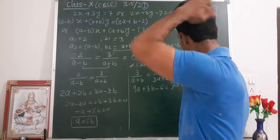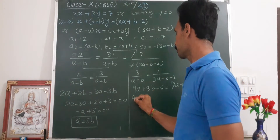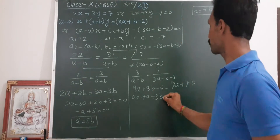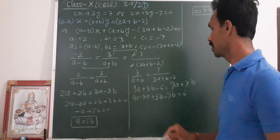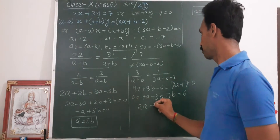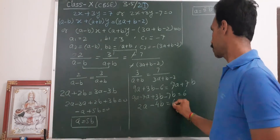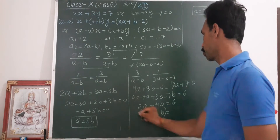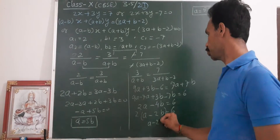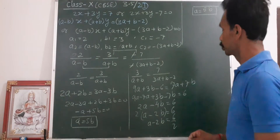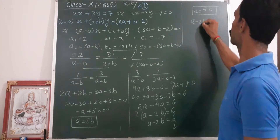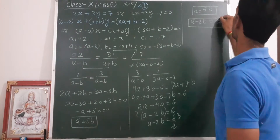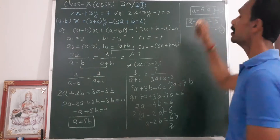Taking the second pair of ratios and solving, we get 9A minus 7A, which gives 2A minus 4B equal to 6. Taking 2 as common: A minus 2B equals 3. This is equation 2.